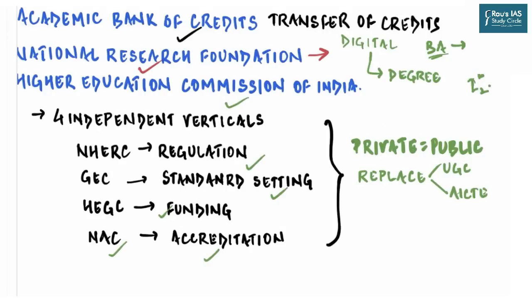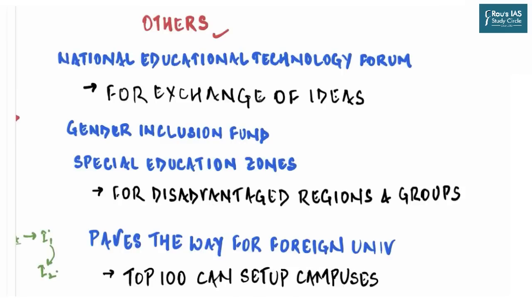Students often ask about the difference between policies, acts, and bills. A policy is like a framework that gives direction but does not have legal backing. After the policy is laid out, various acts and executive orders are issued to implement its provisions. NEP 2020 will also do away with the distinction between private and public sector colleges as far as regulation, standard setting, and accreditation are concerned — though differences in funding will remain.